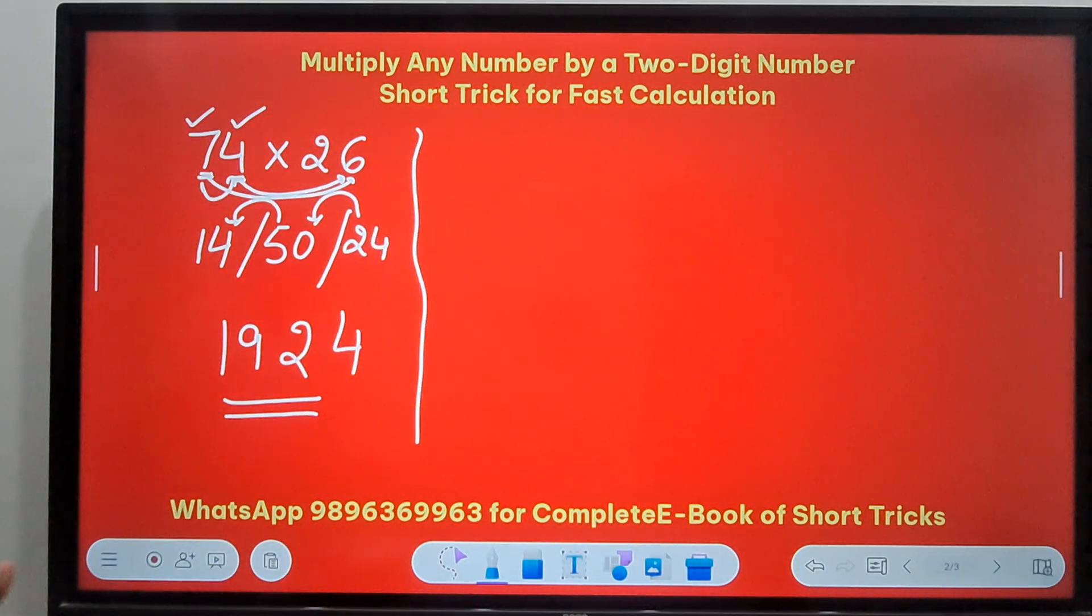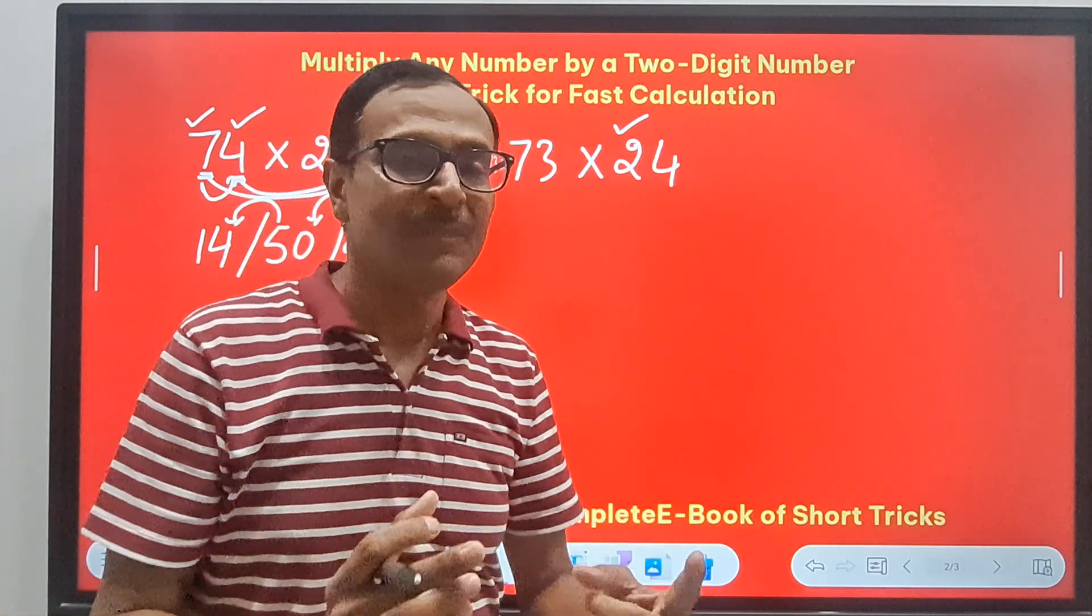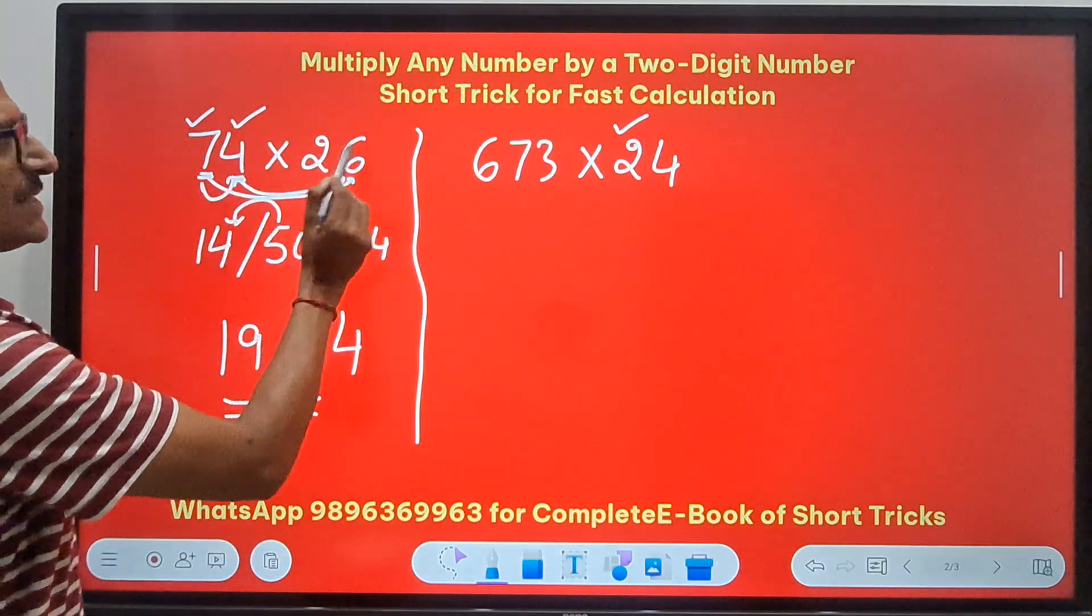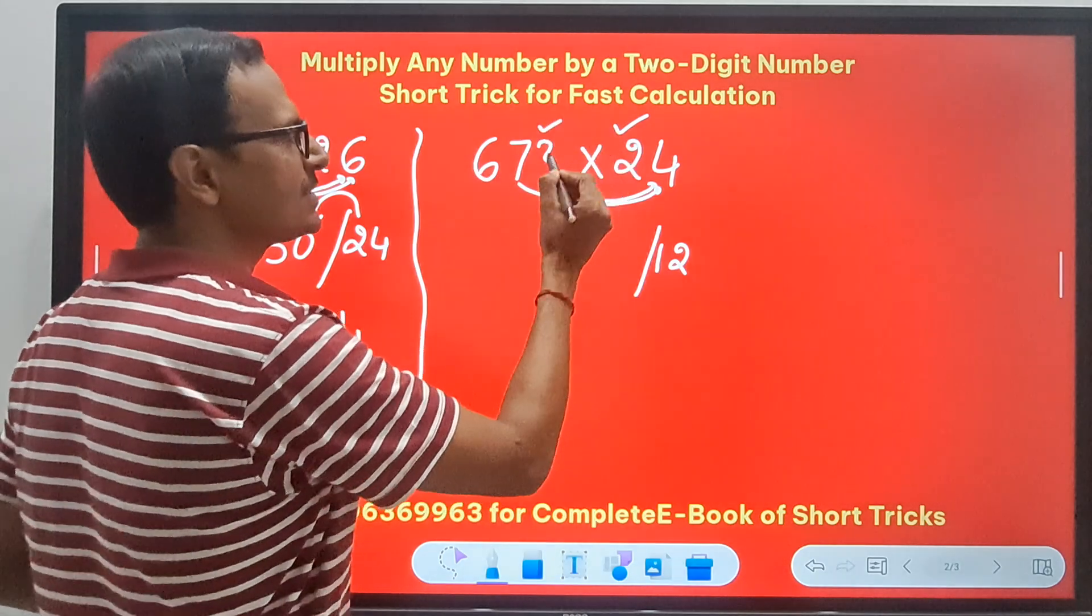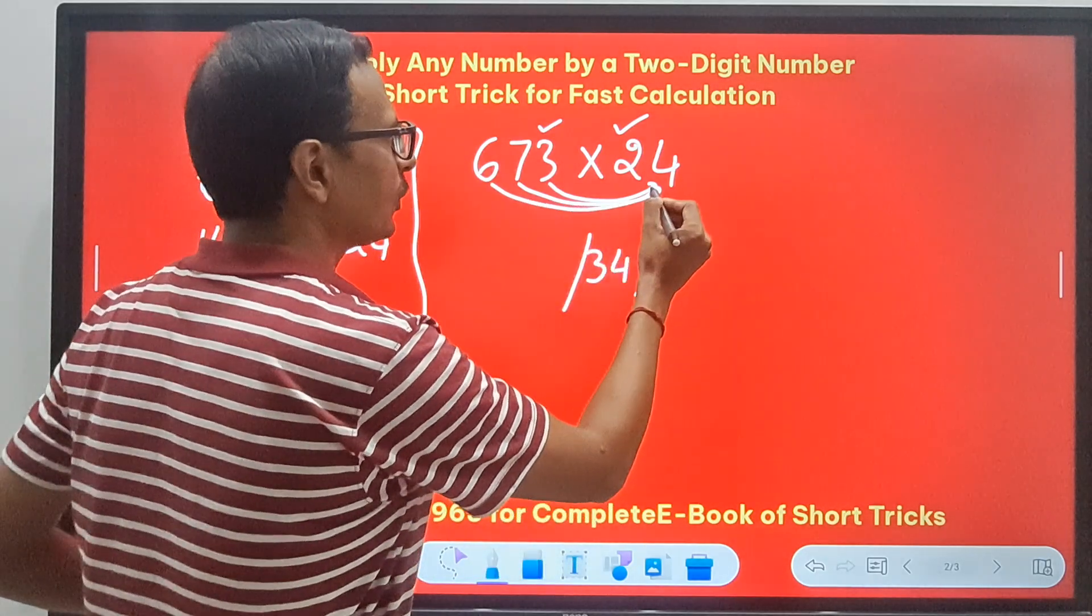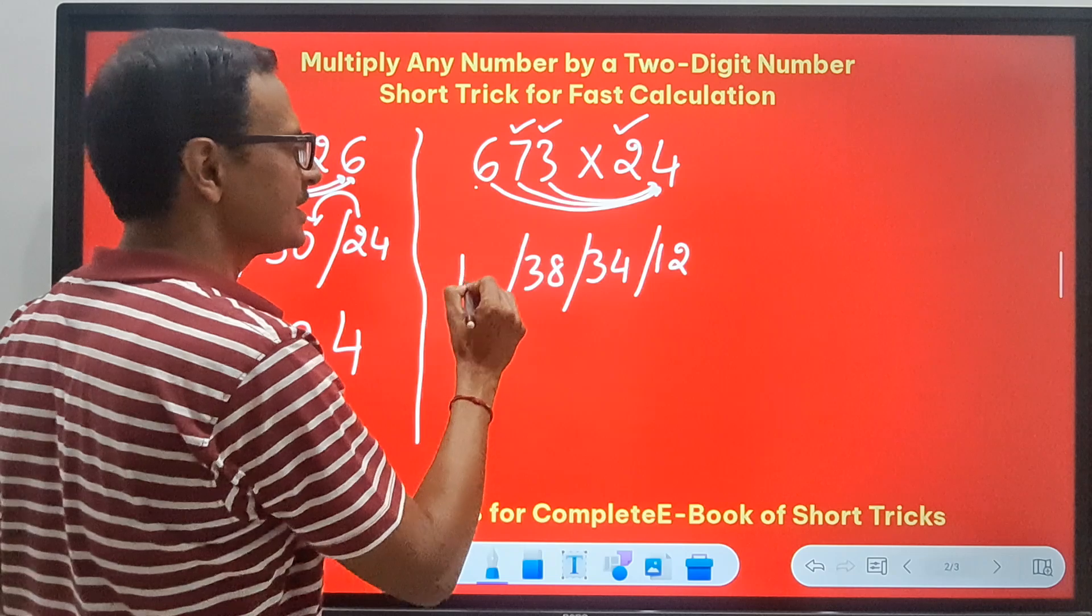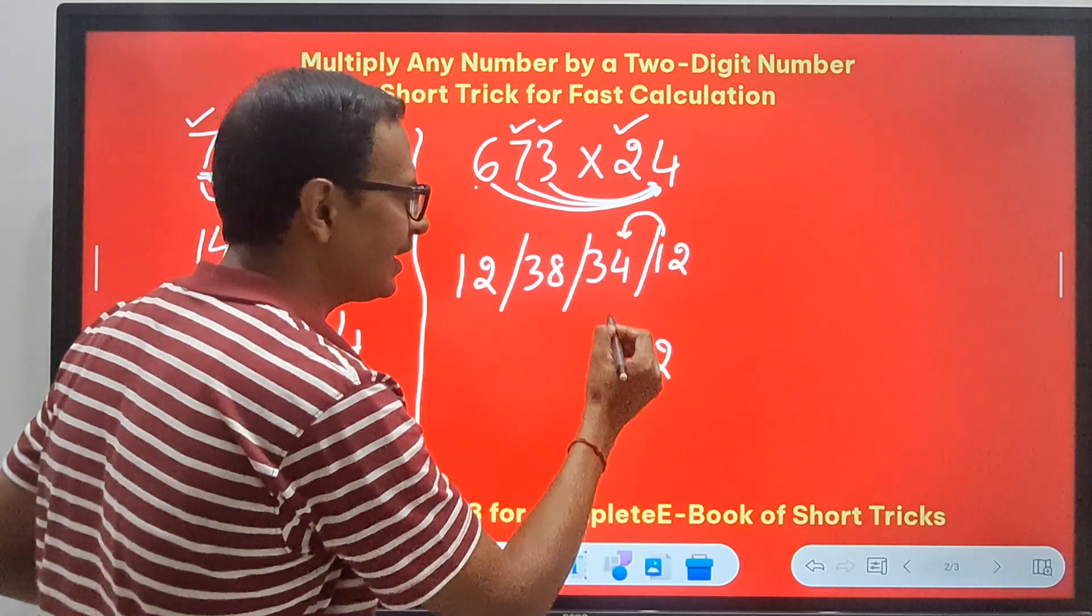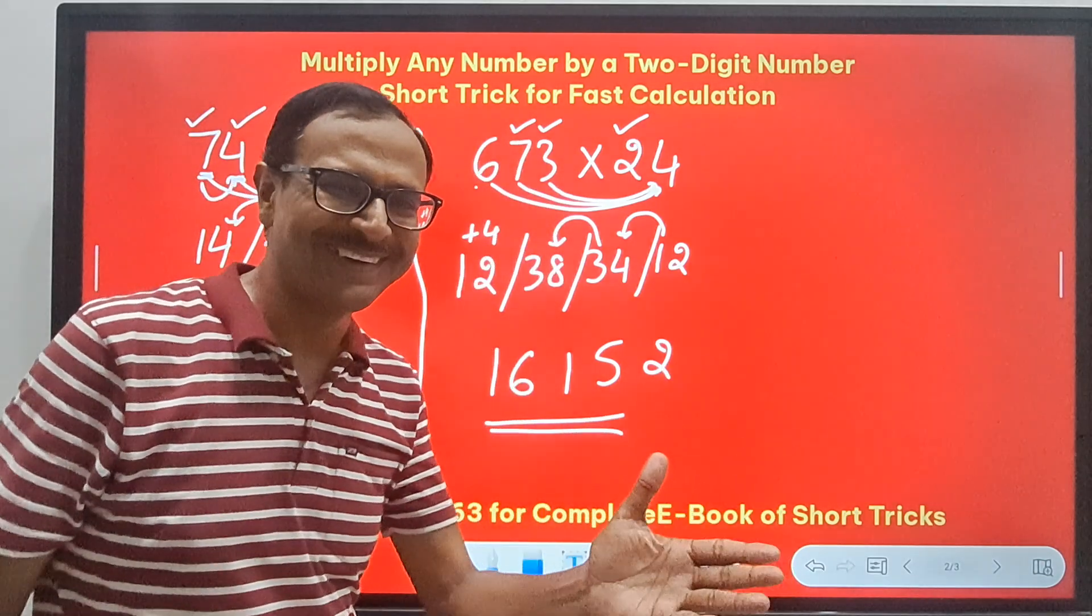Let's extrapolate this to a 3-digit number. Let's take 673 and multiply it by 24. I am taking 2 again so that you get used to the method, and then apply it for 30s, 40s, 50s, 70s, 80s, 90s, whatever. 3 × 4 = 12. 7 × 4 = 28, and double of this is 6, 28 + 6 = 34. Then 6 × 4 = 24, and double of 7 is 14, so 24 + 14 = 38. And finally, double of 6 is 12. So we have 4 numbers, and these are the 4 numbers I wanted. Let's start: 2, 1 carry 35 means 5, 3 carry 41 means 1, 4 carry 16. 16152 is the product. Wow, I simply love this!